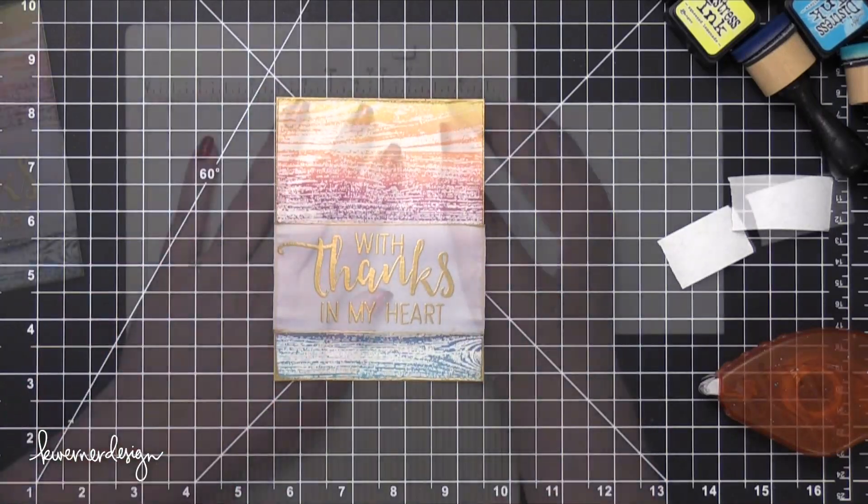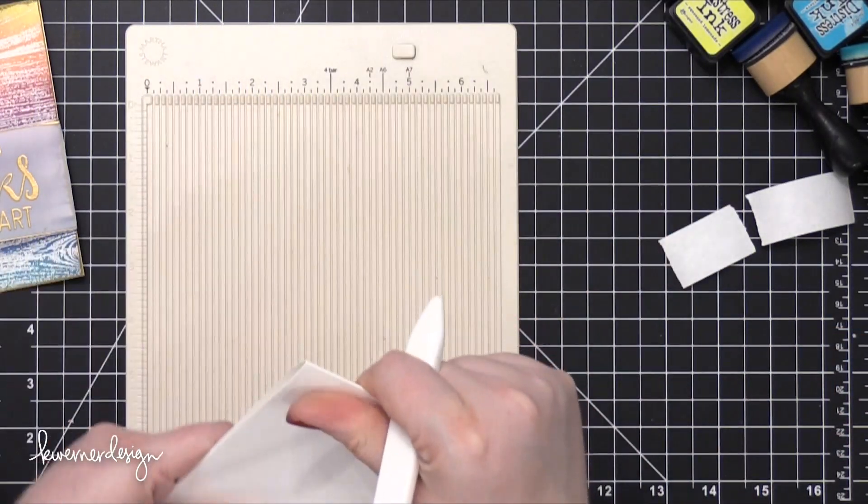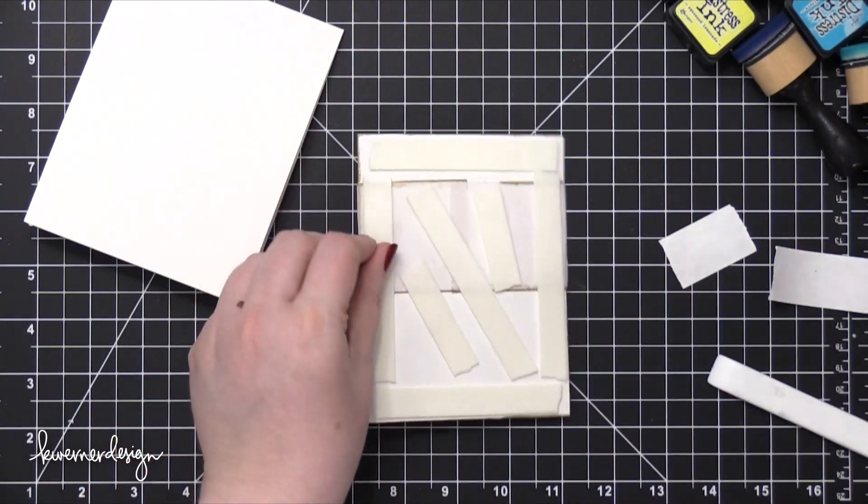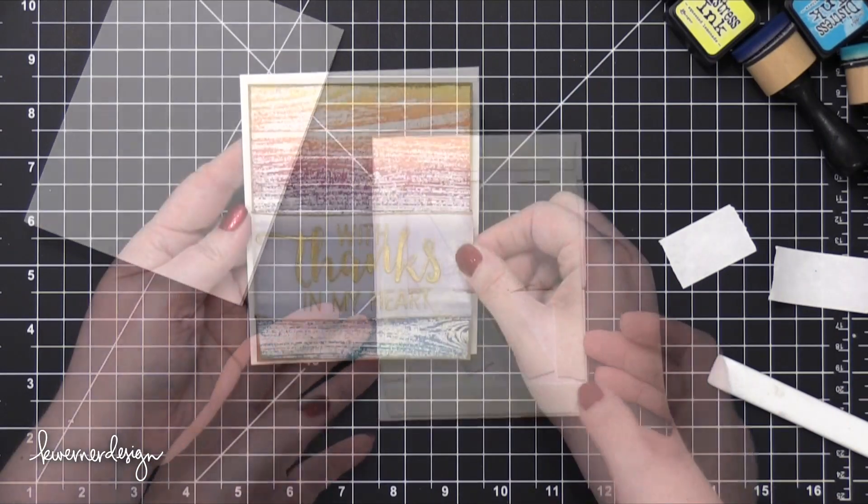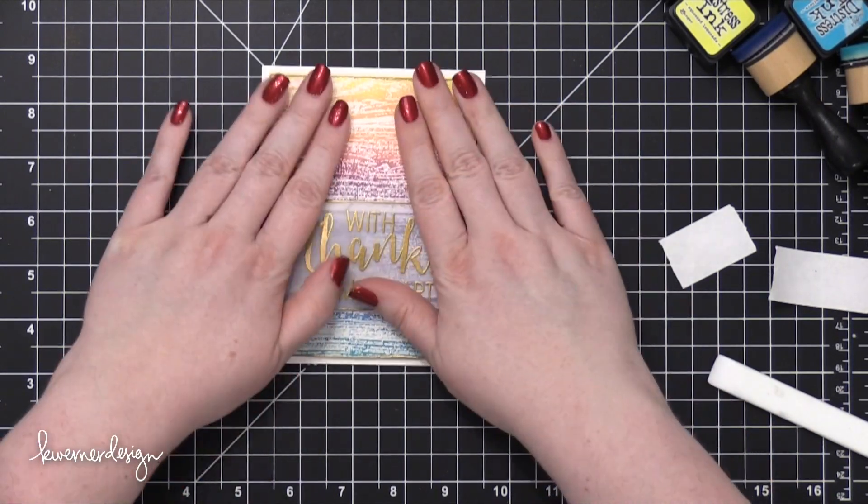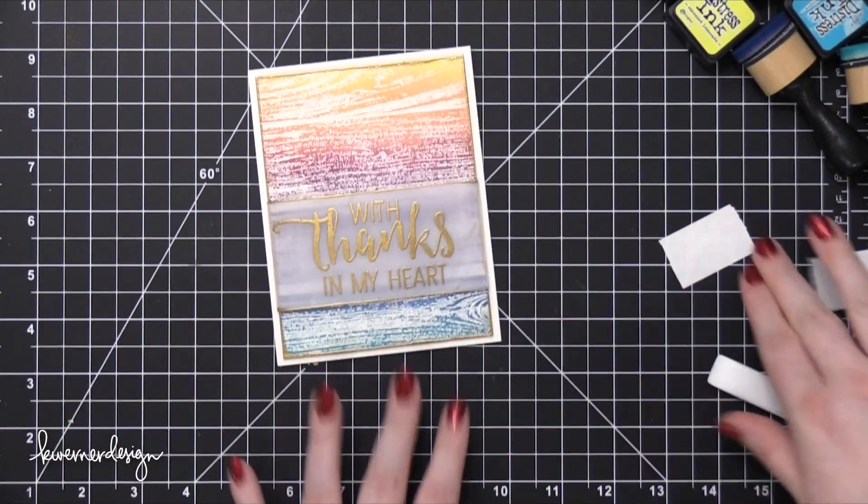I'm going to go ahead and prep the card base. The card base is made out of Neenah Solar White. This is the 100 pound version now, so it's the same cardstock that I used for the main background piece, but it's heavier, so it's a little bit better for a card base. Put a bunch of foam adhesive on the back of that, and then press it down onto my card. That finishes the card for today.